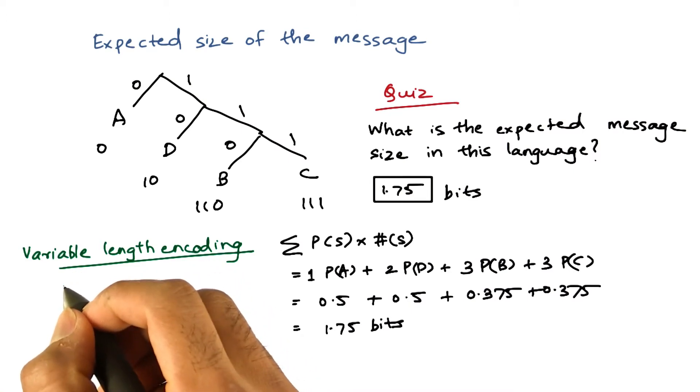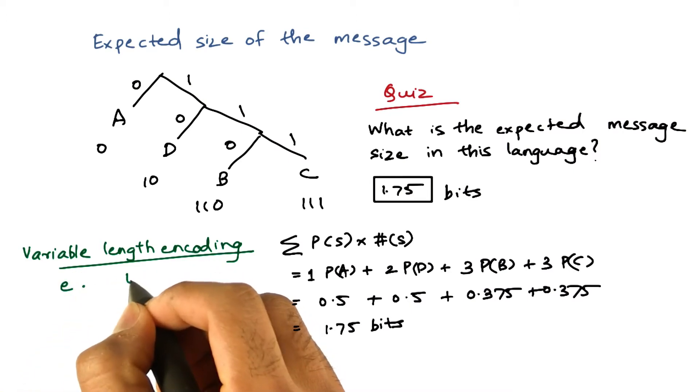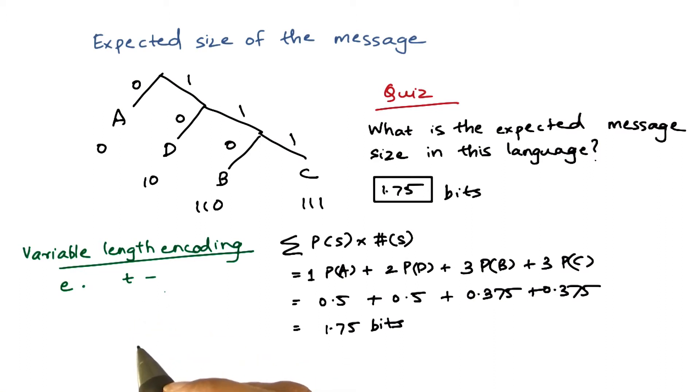That's why in Morse code, E is generated by a dot and T is generated by a dash. Since E and T occur more frequently, they have the smallest message size.